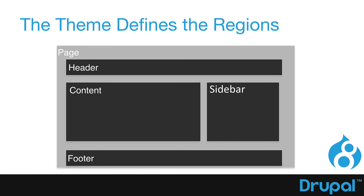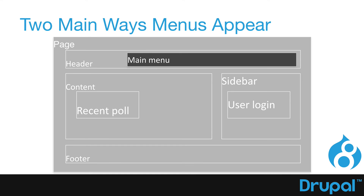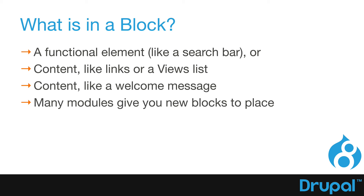On any Drupal page, the theme defines the regions. There's a header region, content, sidebar, and footer, and Drupal 8 has made some changes in how these work. Blocks are placed in regions, and menus can appear in a block region or they can be hard-coded into the theme. A block is a functional element like a search bar, content, links, or even a views list or welcome message. Blocks can contain just about anything you want, and a lot of different modules give you new blocks to place.